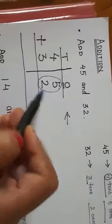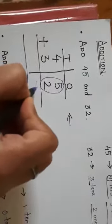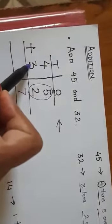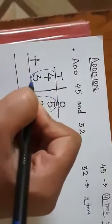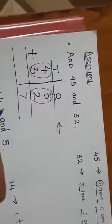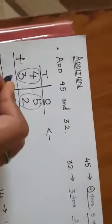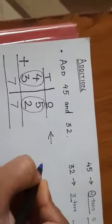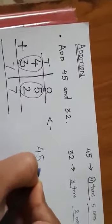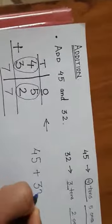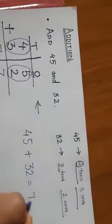Tell me 5 plus 2 is 7. Very good. And then 4 plus 3. Ab ham isse add kareenge. So 4 plus 3 will give me what? 7. So that means 45 plus 32 is equal to 77. Okay? So I have solved this. Now I hope you have understood the rules.